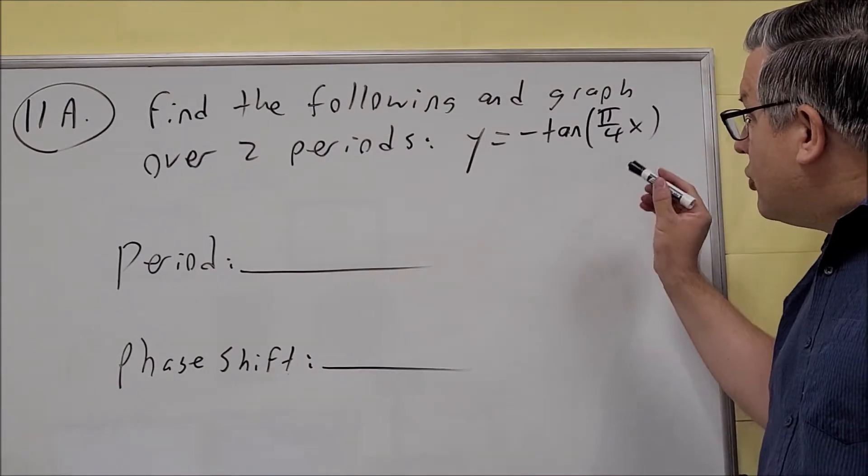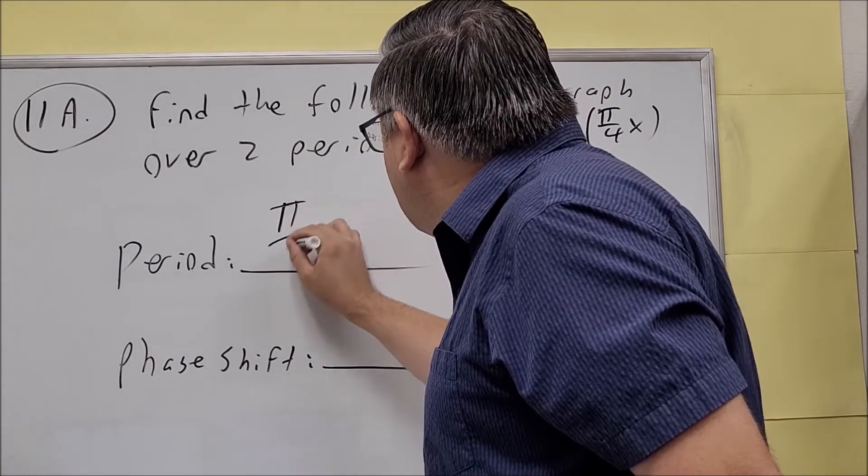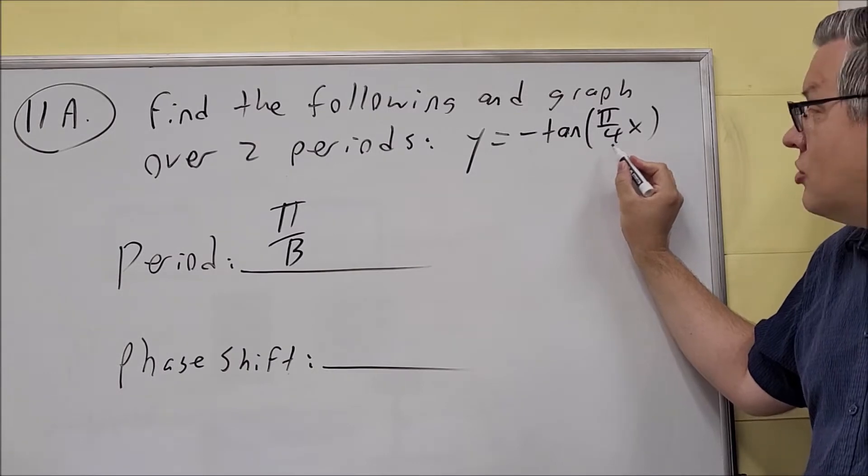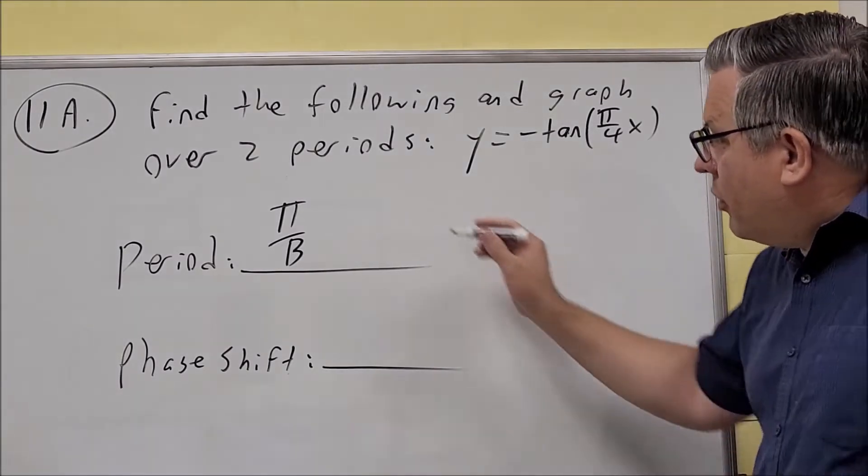The period formula is π divided by b, where b is the coefficient in front of x. So we're going to use π over 4.